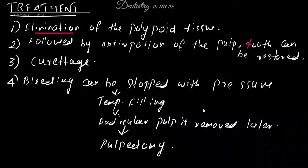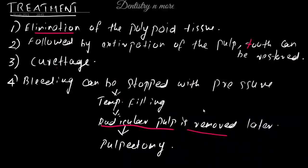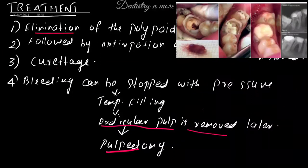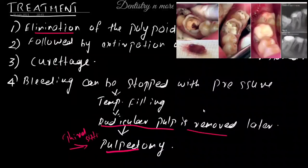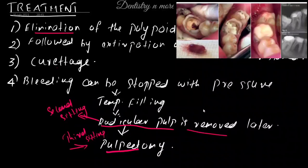On the first sitting, we curette all the polypoid tissue and the coronal part of the granulation tissue, place a temporary dressing, and send the patient back. On the second sitting, we remove the radicular pulp. If time permits, we can perform pulpectomy on the second sitting; otherwise, pulpectomy can be done on the third sitting. So: first sitting — temporary filling; second sitting — radicular pulp removal; third sitting — pulpectomy if needed.